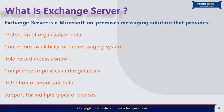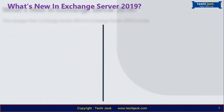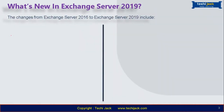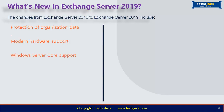Now let's look at what is new in Exchange Server 2019. The changes from Exchange Server 2016 to 2019 include protection of organization data, which we have already discussed. Modern hardware support is another change — Exchange Server 2019 now supports up to 256 GB of memory and 48 CPU cores. Windows Server Core support allows you to install Exchange Server 2019 on Windows Server Core 2019, which is more secure because it minimizes the attack surface area and deploys fewer components on the server.